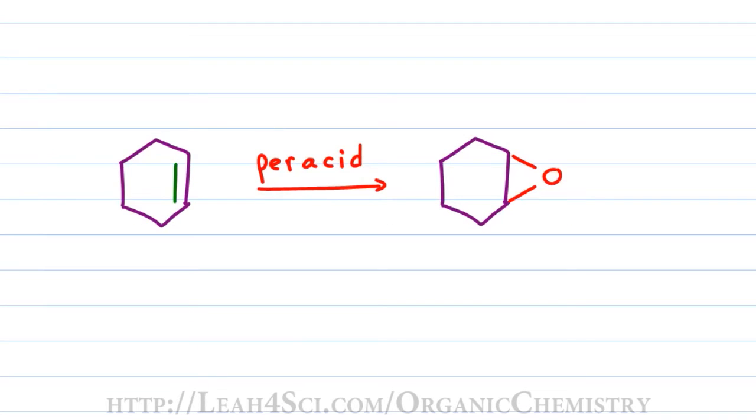The epoxidation reaction involves an alkene reacting with a peroxy acid or simply a peracid to give you an epoxide. This reaction follows the syn addition pathway because the oxygen forms two bonds to carbon atoms forming a ring on the same plane either above or below where the pi bond used to be.